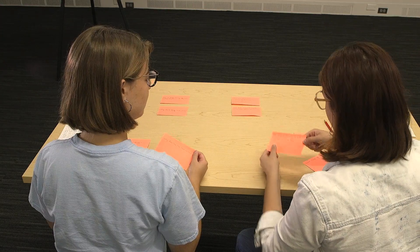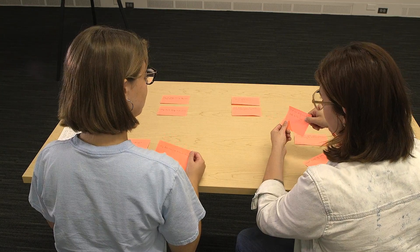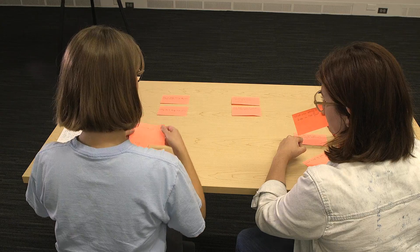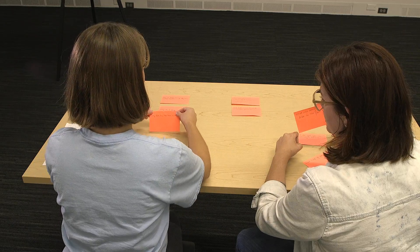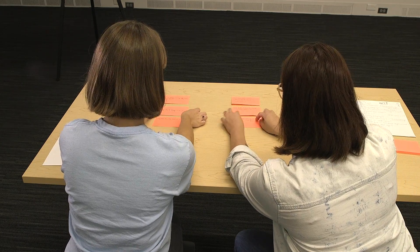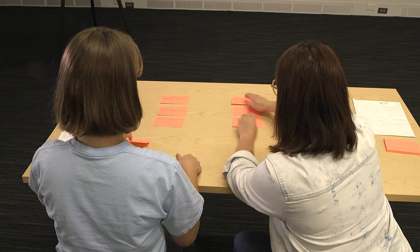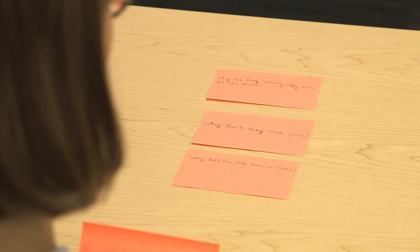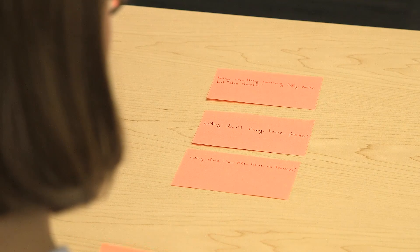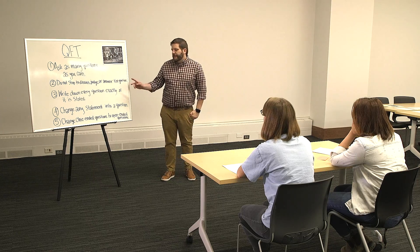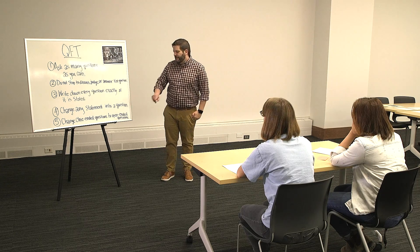Next, the class prioritizes their questions based on instructions provided by the educator. For example, you could have them choose their three most important questions, three questions they would like to research further, or three questions they would like to use to guide their learning. This ties into how the educator envisions students making use of their questions as the lesson progresses.